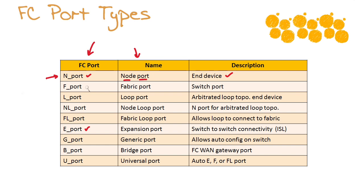We have the F port — this is a fabric port. When we take fiber channel and extend it out over a whole bunch of devices in a switched infrastructure, we call this the fabric. So the ports on these switches that build the fabric are called fabric ports, or F ports.